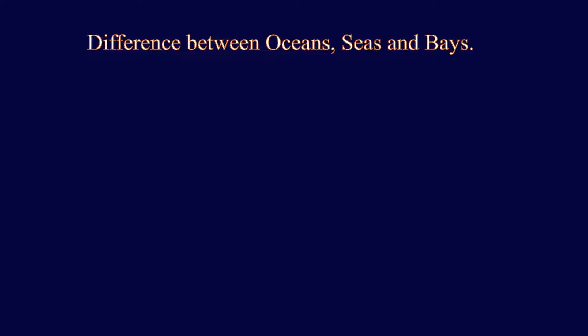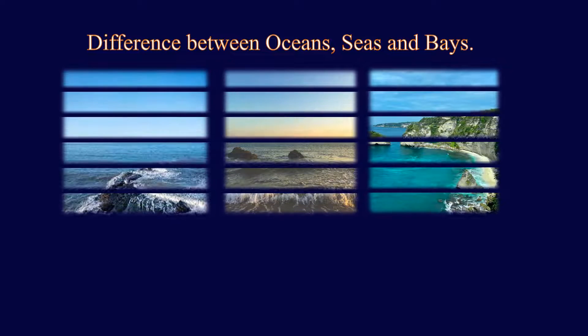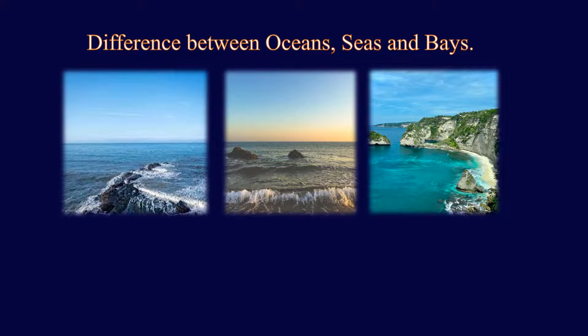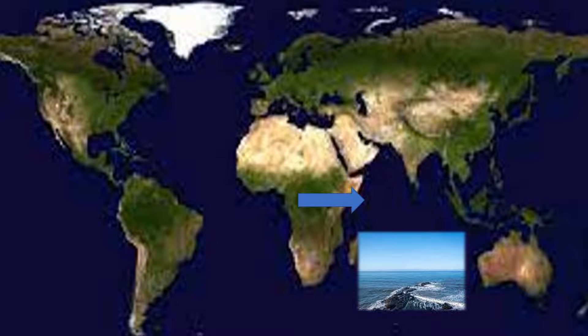The difference between Oceans and Seas: Oceans are huge bodies of salt water that are connected to other oceans. They often separate continents.